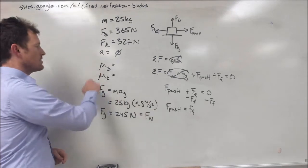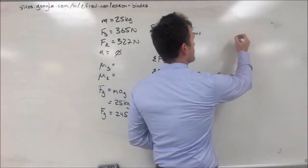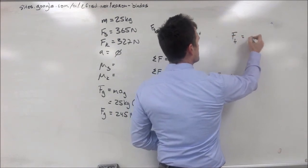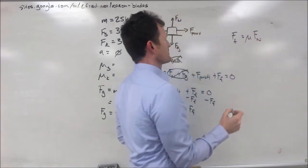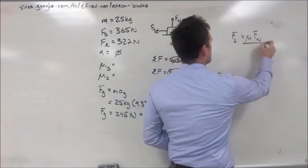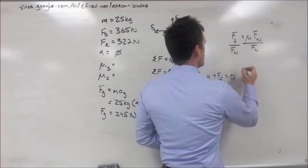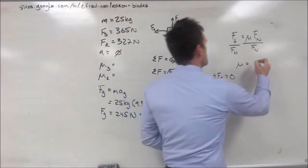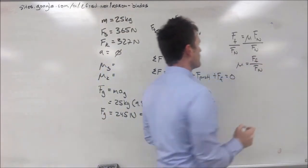Now, we're trying to figure out our mu s and mu k. And, our equation that relates our forces to mu k are, our friction force is equal to mu times our normal force. Now, if we divide both sides by our normal force, we end up with our coefficient of friction is equal to our friction force divided by our normal force.